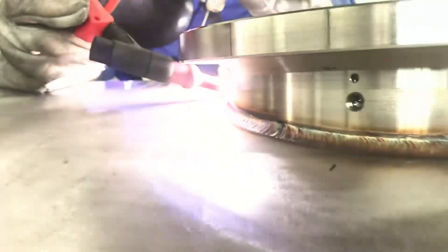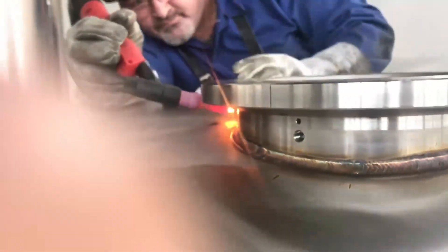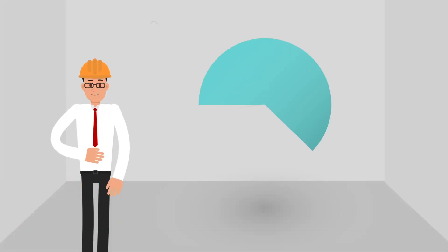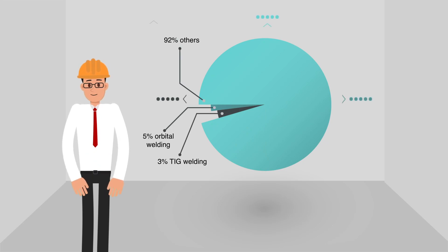TIG, tungsten inert gas welding, encompasses this kind of welding. The graph shows that TIG welding only accounts for 3% of all welding worldwide, and orbital TIG welding only makes up approximately 5% of TIG welding. Even though orbital welding only makes up a small portion of applications, its development has been crucial to the success and ever-rising standards of numerous sectors.